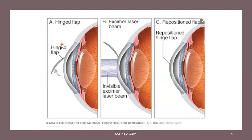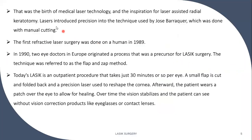As you can see in the diagram, first a free flap is created on the cornea, and then the laser is applied to the cornea, and the cornea is repositioned. That is how laser surgery was performed in the early days. That was the birth of medical laser technology.